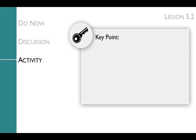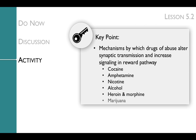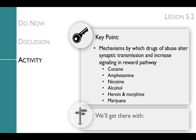The key point of the activity is to explore the mechanisms by which drugs of abuse alter synaptic transmission and increase signaling in the reward pathway. The drugs of abuse included in the jigsaw are cocaine, amphetamine, nicotine, alcohol, heroin and morphine, and marijuana. We'll get to this key point with a jigsaw on drugs of abuse.